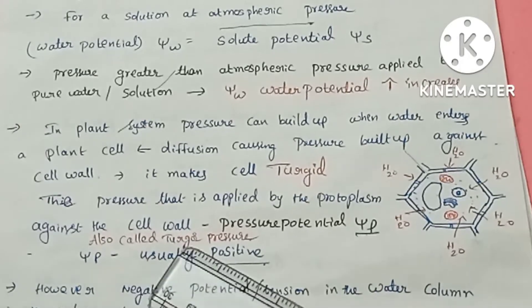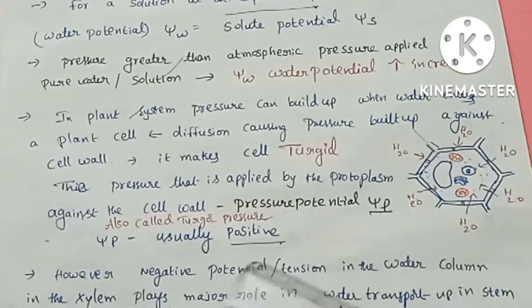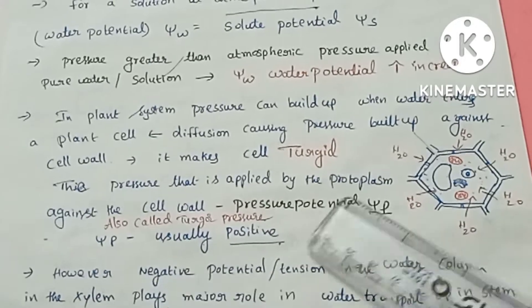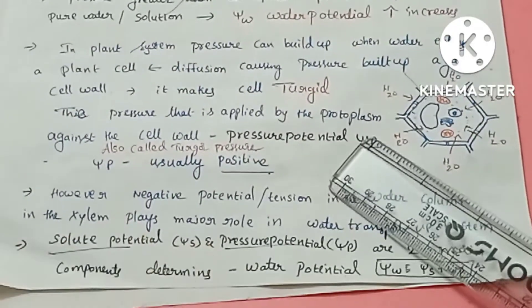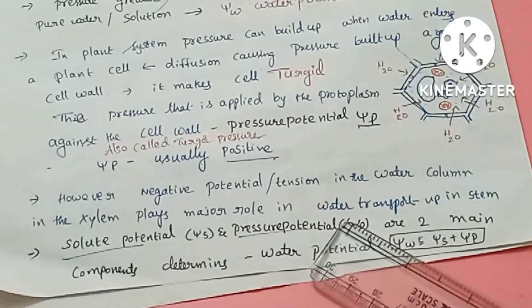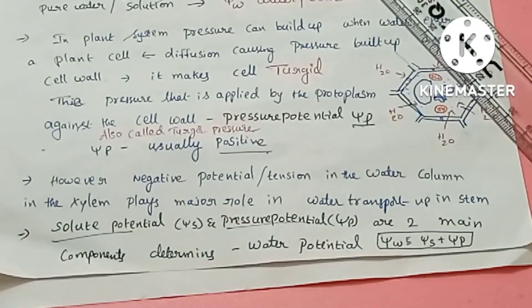Water potential is determined by two components: solute potential and pressure potential. Solute potential plus pressure potential equals water potential.